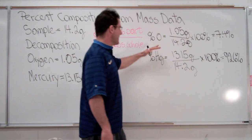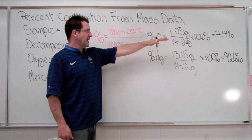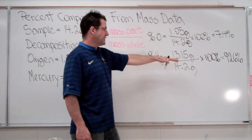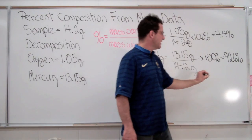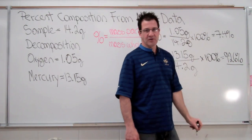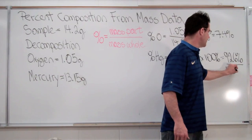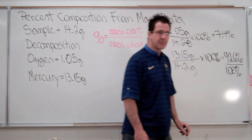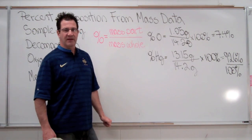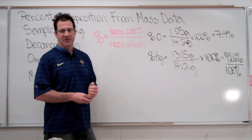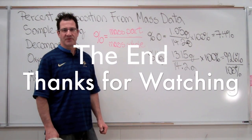So therefore, we have our sample is 7.4 percent oxygen. Mercury is 92.6 percent. And if we add those up, of course, we can check our answer, which you should always do. You get 100 percent. Okay. So that's how you calculate the percent composition of your sample from mass data. Thank you very much.